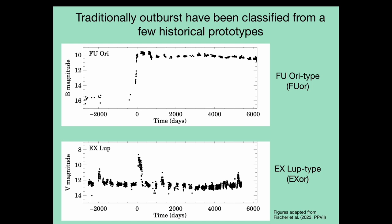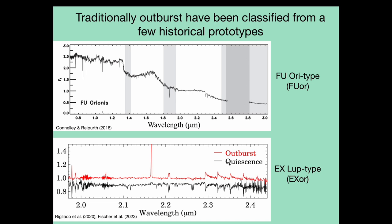The traditional classification of young stellar accretion outbursts breaks them into two categories: the FU Ori class, named after the prototypical star FU Ori, and the EX Lupi class, named after the star EX Lupi and sometimes called EXORs. These light curves show the dramatic differences in outburst durations. FU Ori had an outburst in 1937 and has stayed bright ever since. In contrast, EX Lupi has had multiple outbursts, mostly lasting months to years. The differences between these classes extend to their spectra as well.